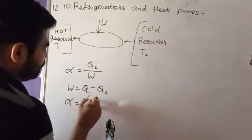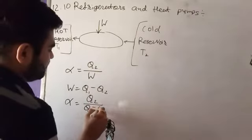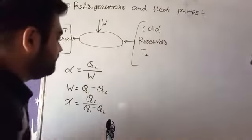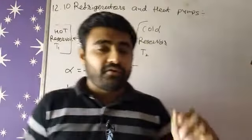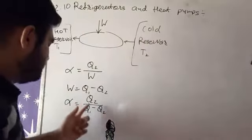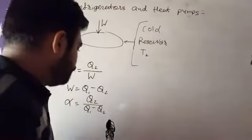By putting here, we get α = Q2/(Q1 - Q2). So, that is our performance coefficient.